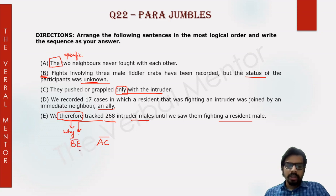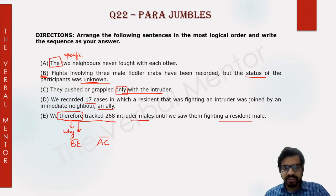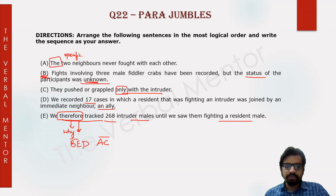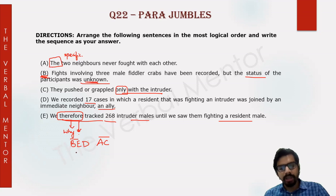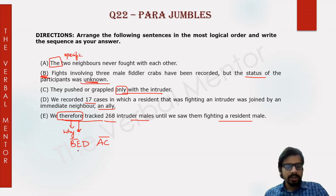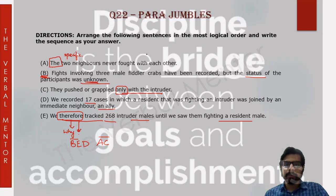While performing this research, they came across — they recorded 17 cases in which a resident that was fighting an intruder was joined by the immediate neighbor. So B, E, D form a concrete triplet. Clearly A and C are observations that should come after mention of the experiment. The correct answer is B-E-D. Keep learning, keep improving — happy learning!